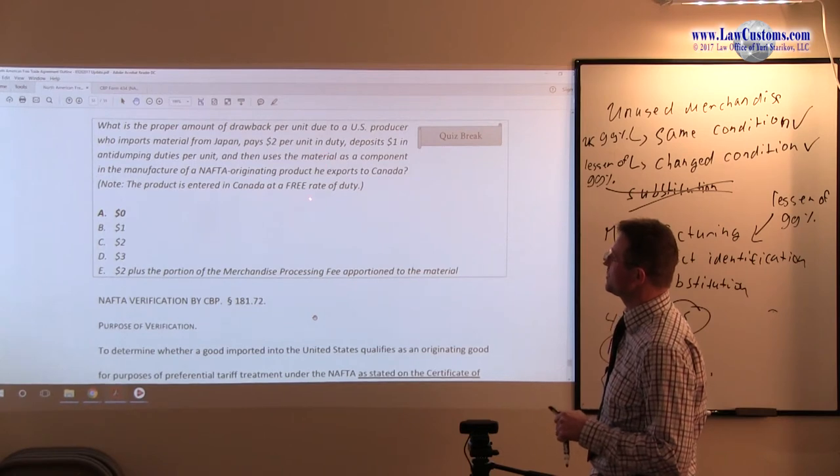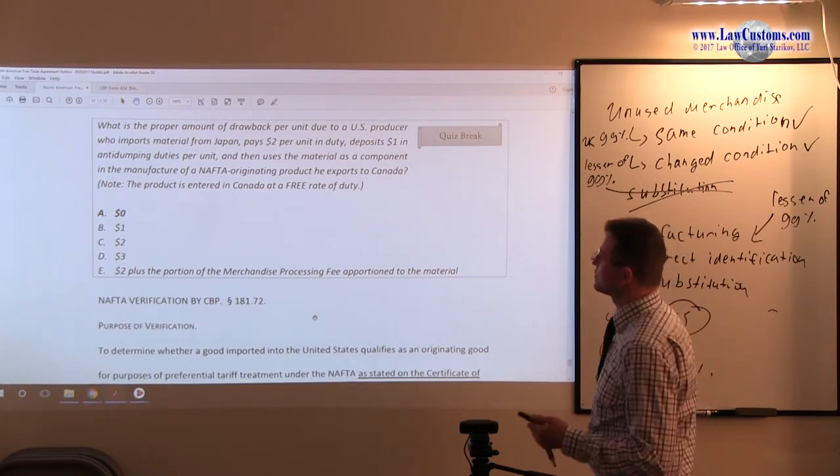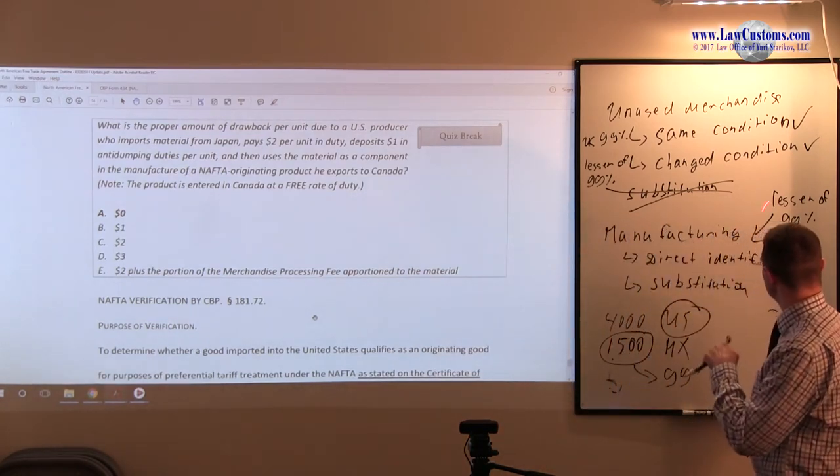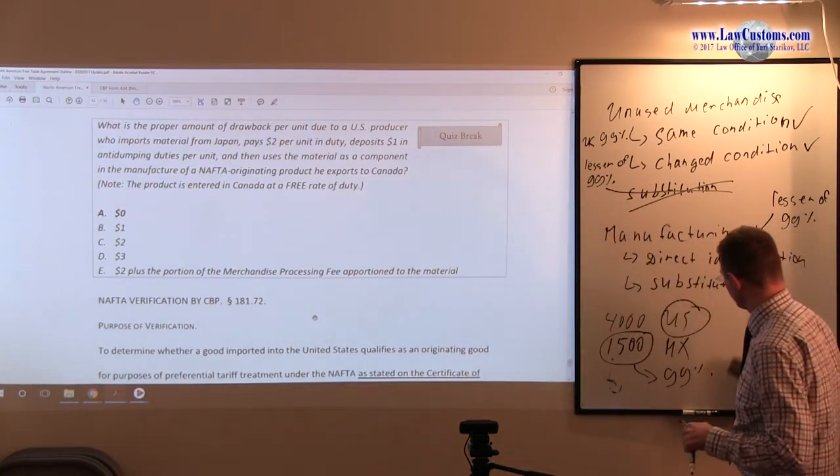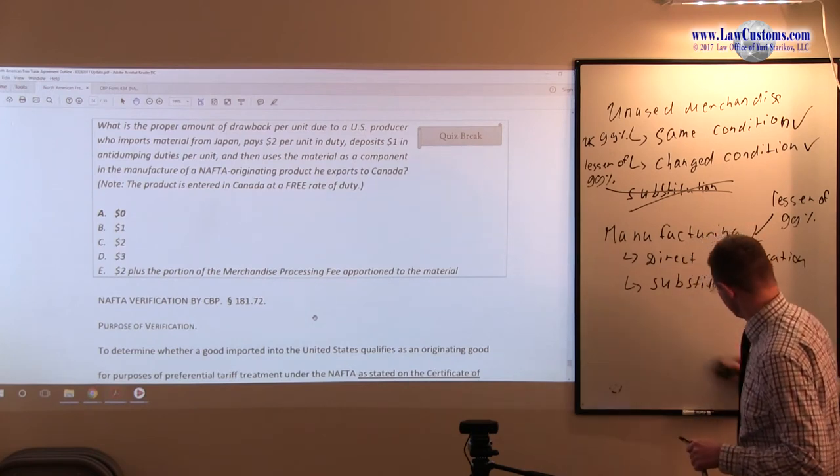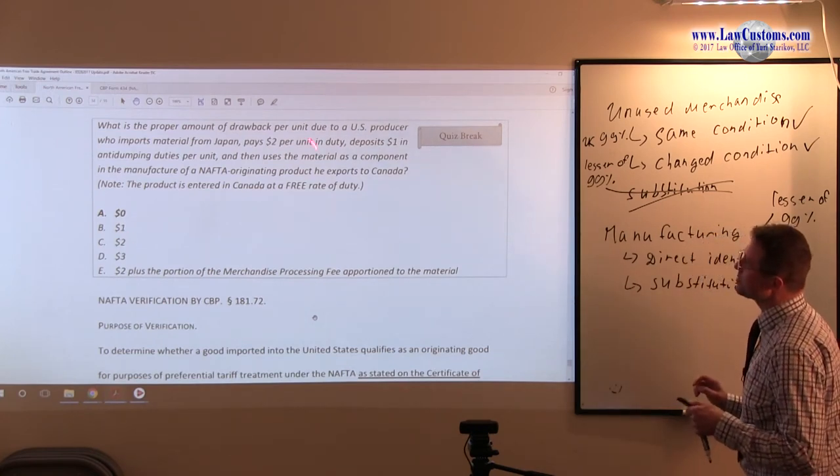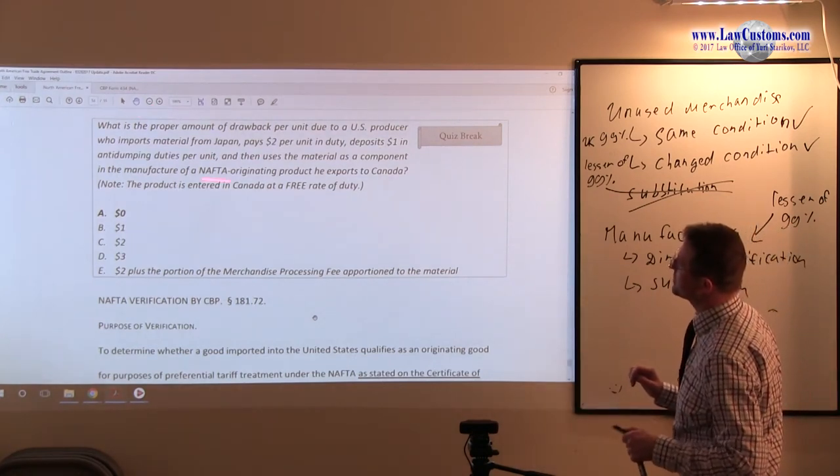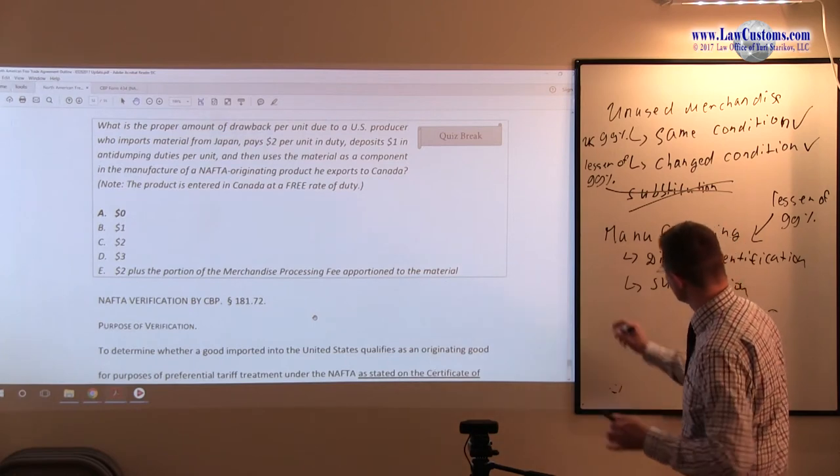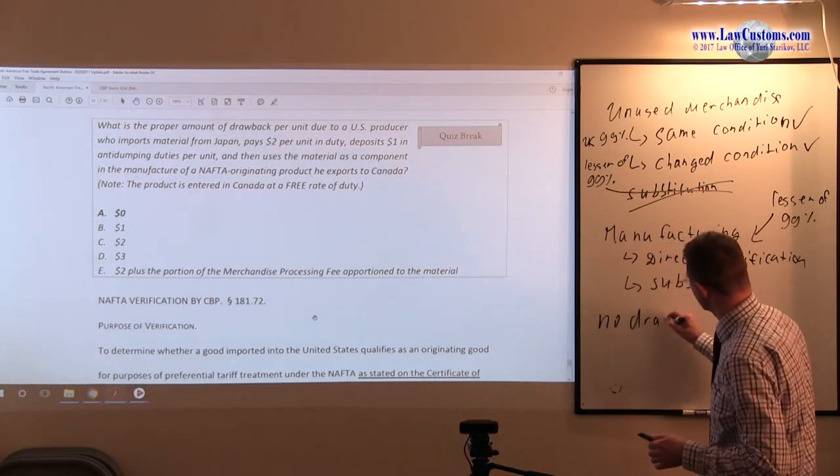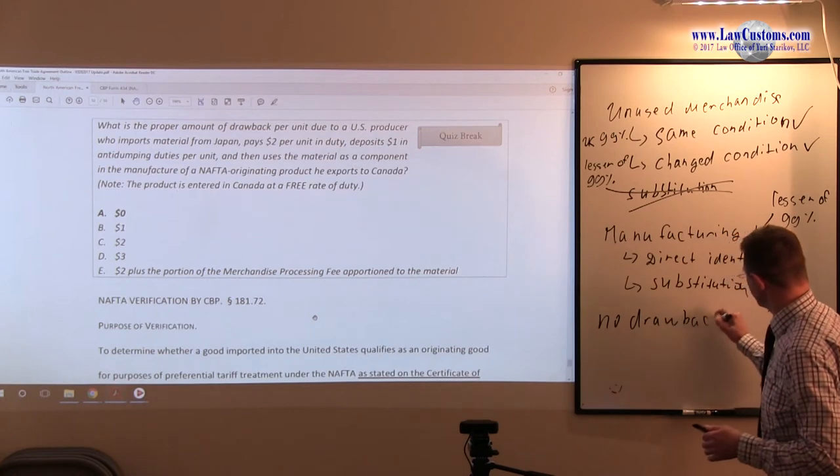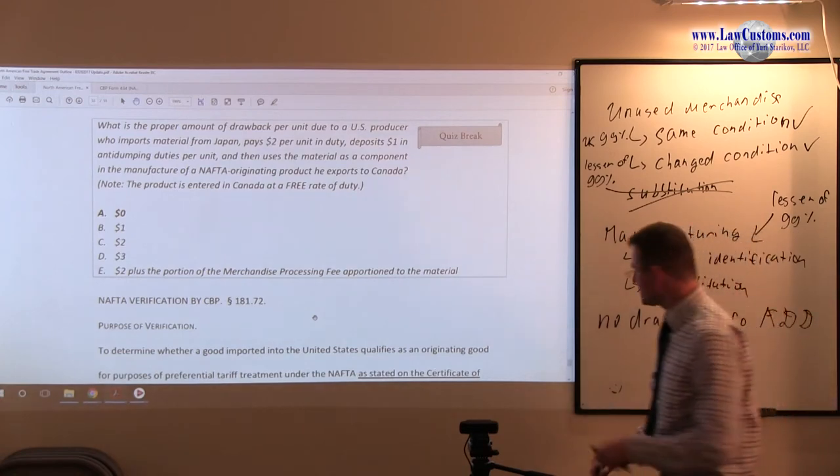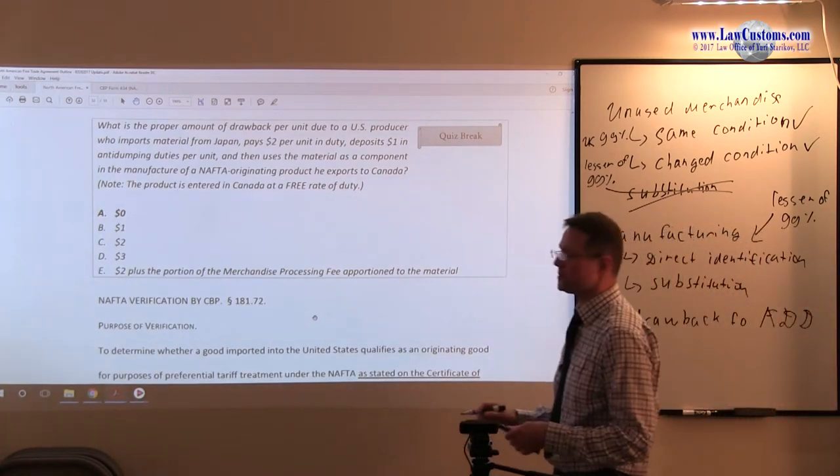So Canada is duty-free. So we have a manufacturing drawback which is 99% rule. So what do we have here? Remember anti-dumping duties are not refundable. Where did we see that? Anti-dumping duties. So no drawback for anti-dumping duties. I abbreviate it as ADD. No drawback for anti-dumping.